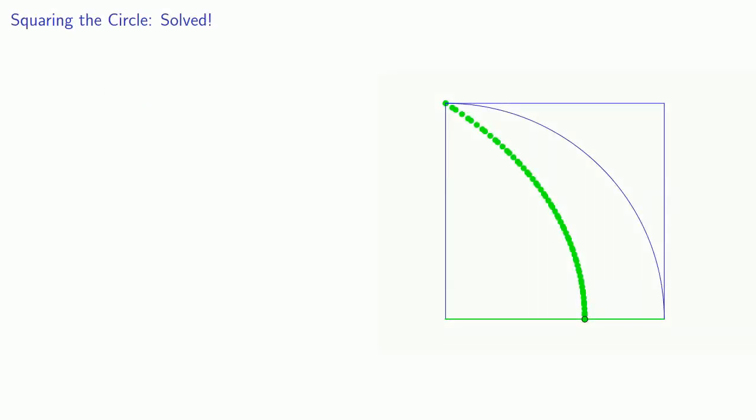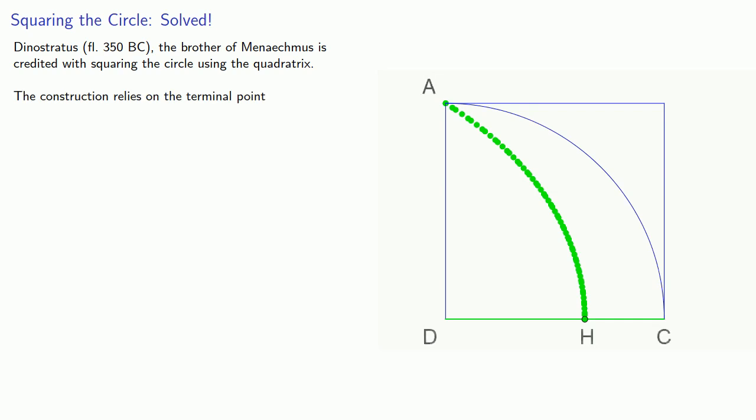Dinostratus, who lived around 350 BC and was the brother of Menaechmus, is credited with squaring the circle using the quadratrix. His construction relies on finding the terminal point, and there's just one problem. That terminal point doesn't exist.